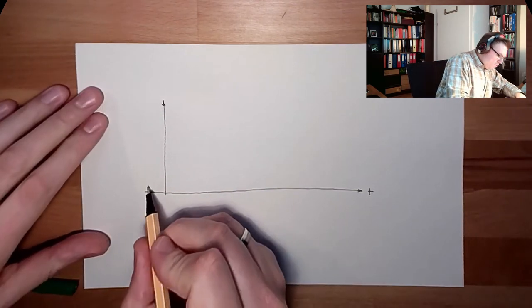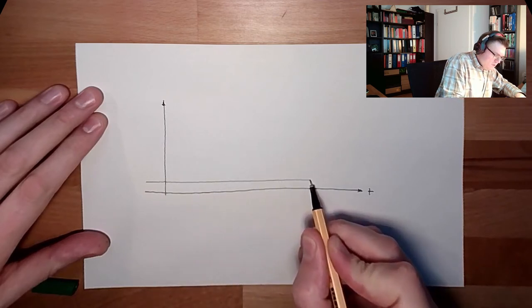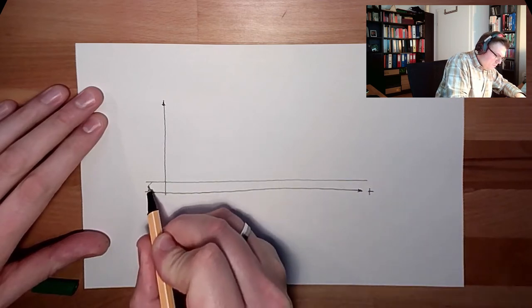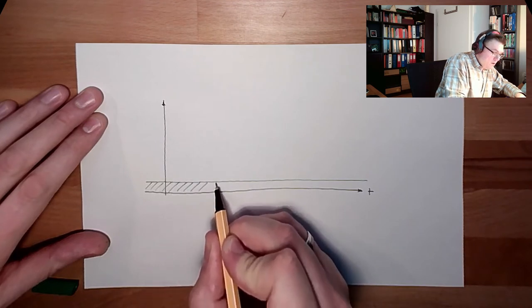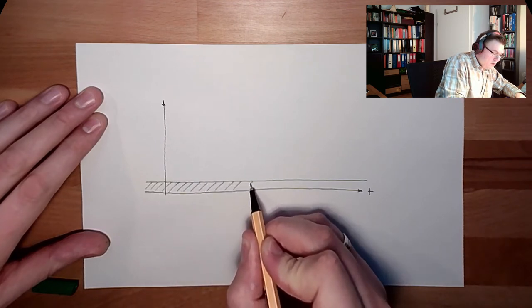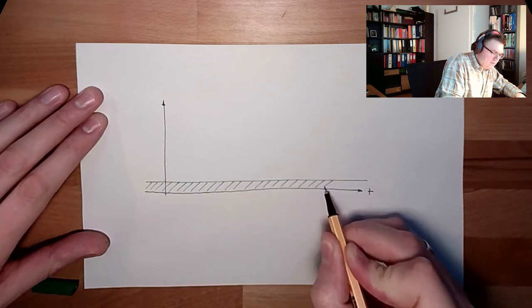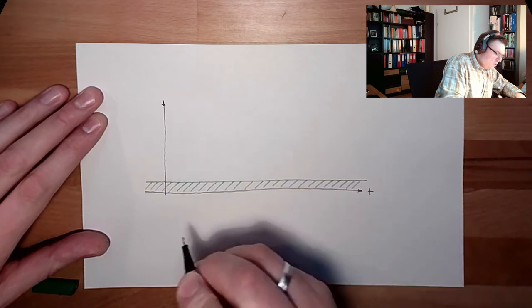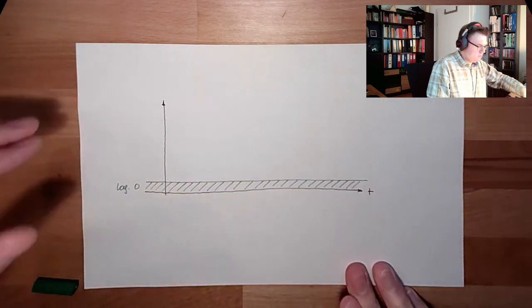They say if the voltage level is in an area around zero with a certain maximum, they guarantee that their logic circuit is interpreting this as zero. So this is logic, logically zero, this area.